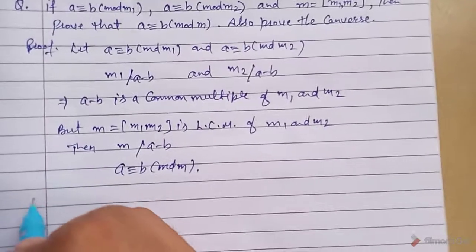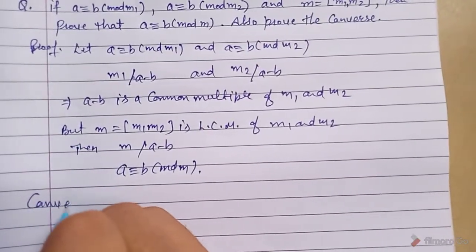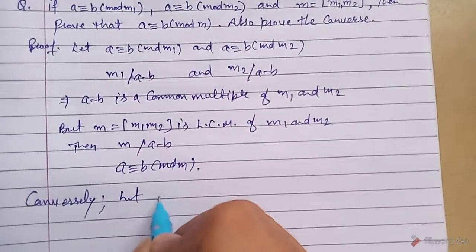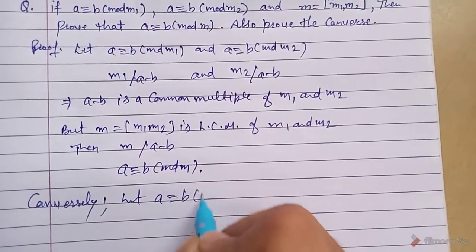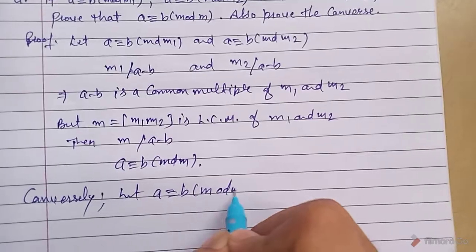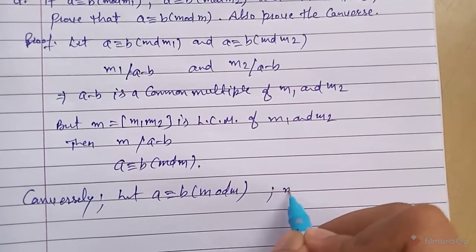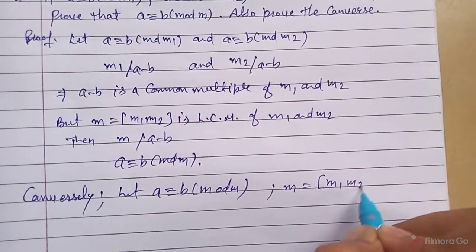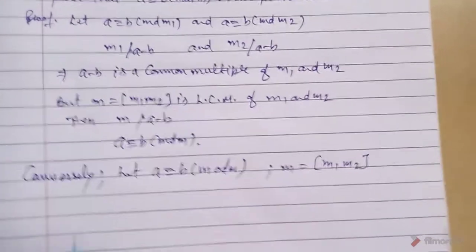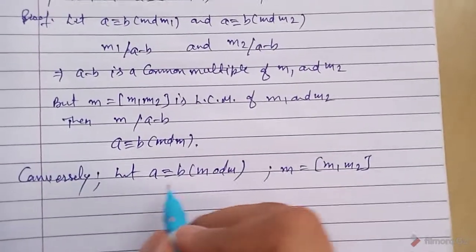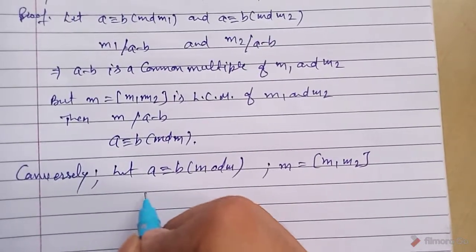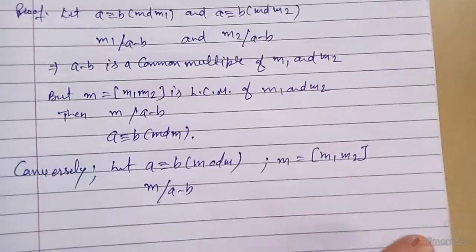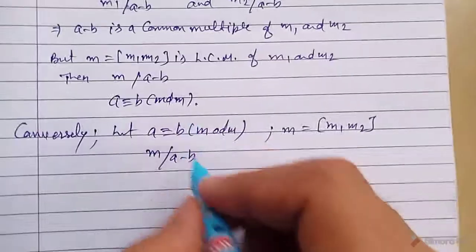Conversely, let a ≡ b (mod m), where m is the LCM of m1 and m2. From the definition of congruence, we can write m divides (a − b).